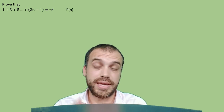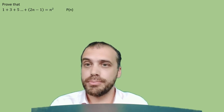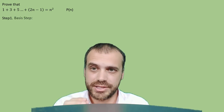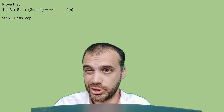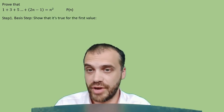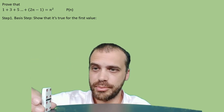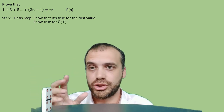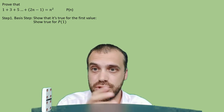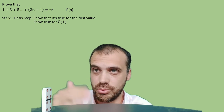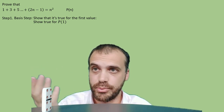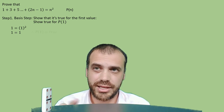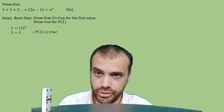This is what we call P(N), or Proposition N — the proposition that we're making. Step 1 is called the basis step. In the basis step we show that it's true for the first value. This is about setting up our first domino and making sure it works. Mathematically, we show true for P1, Proposition 1. We substitute 1 into our formula and get 1 equals 1 squared, which is 1 equals 1. Therefore, P1 is true.